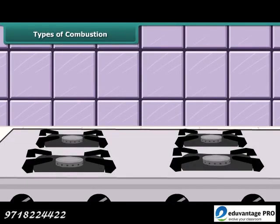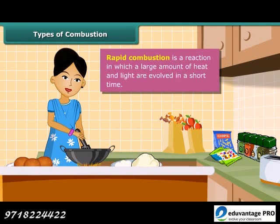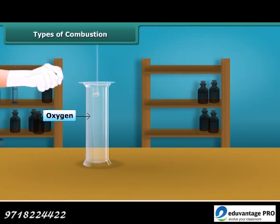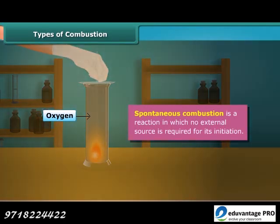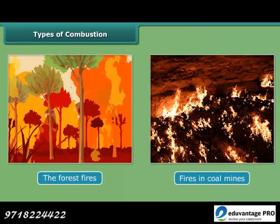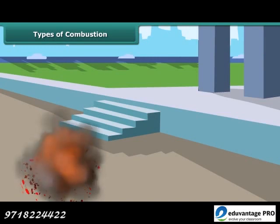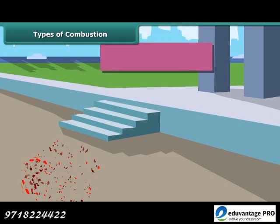Let us now look at types of combustion. A lady igniting LPG in a kitchen — LPG burns quickly producing a lot of heat; this is called rapid combustion. When white phosphorus is left in the open, it catches fire on its own; this is called spontaneous combustion. Other examples include forest fires and fires in coal mines. When a cracker burns, it produces a large amount of heat, light and sound; this type of combustion is called explosion.